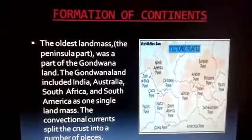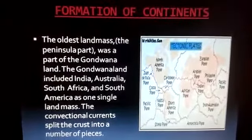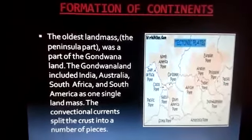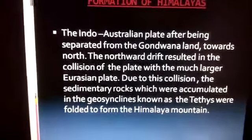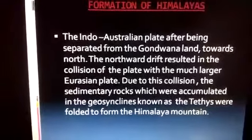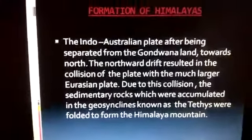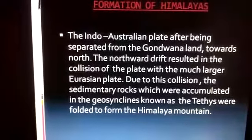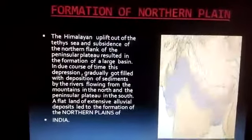The formation of continents begins with the oldest landmass — the peninsular part of India, which is a part of Gondwana land. Different continents formed from different plates. The Indo-Australian plate, after being separated from Gondwana land, moved northward and collided with the much larger Eurasian plate, leading to the formation of the northern plains.